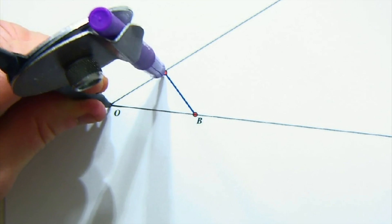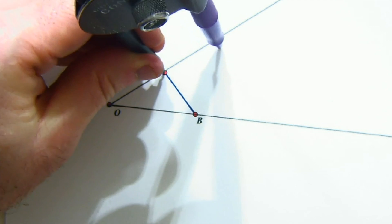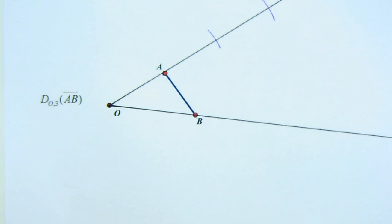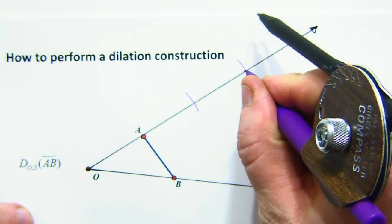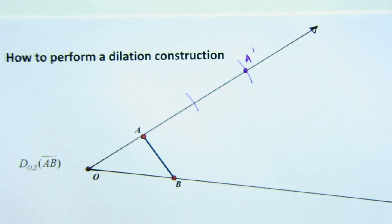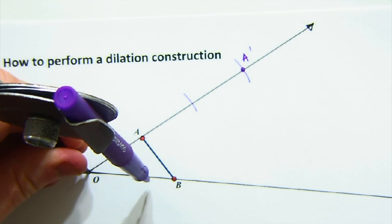So we would stretch it to A, and in this case we would do it three times: one, two, and three. There's our A prime, again three units - one, two, three - because it's three times.